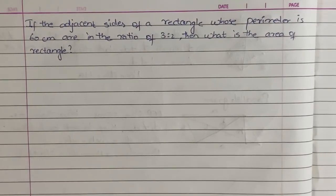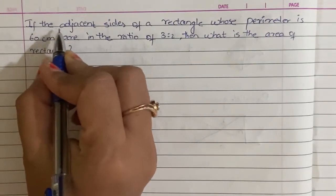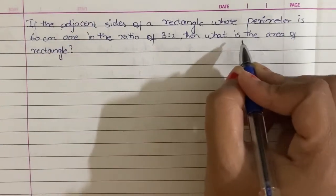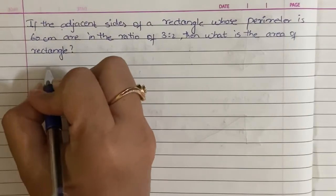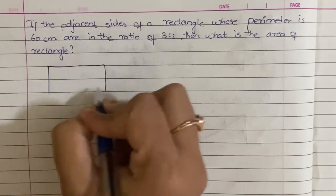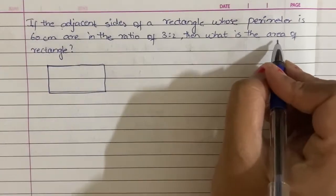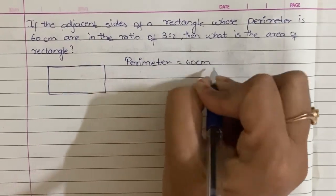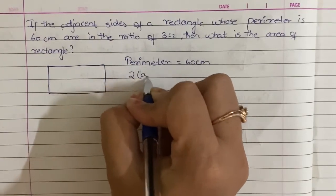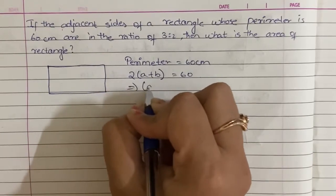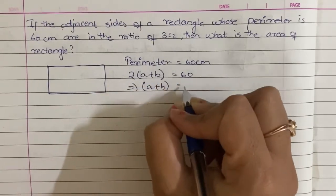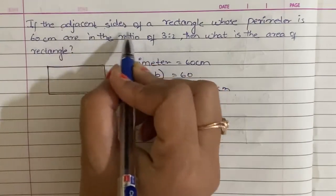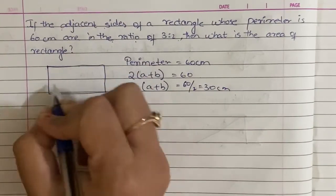If the adjacent sides of a rectangle whose perimeter is 60 centimeters are in the ratio of 3 is to 2, then what is the area of rectangle? First, draw the figure. This is a rectangle. Perimeter is equal to 60 centimeters. The adjacent sides are in the ratio of 3 is to 2.